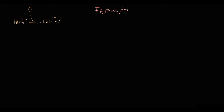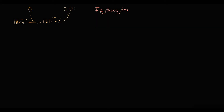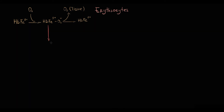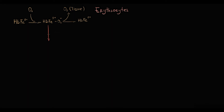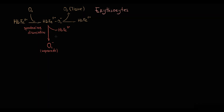Usually when an erythrocyte comes to a tissue, oxygen simply dissociates from iron, diffuses into the tissues, leaving iron in the normal +2 state. But because oxygen is a very unstable molecule, it can spontaneously dissociate — and like someone who leaves a place in a hurry, oxygen does not take back the electrons it had previously donated to iron. Thereby, spontaneous dissociation results in production of superoxide and ferric iron, which is iron in the +3 state, forming highly dangerous superoxide molecules.